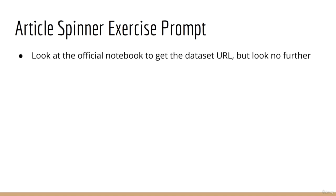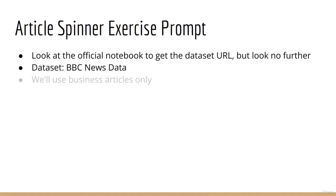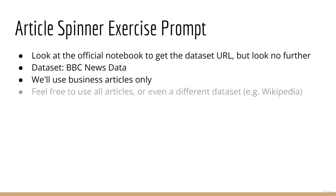In this lecture, I will be giving you an official exercise prompt to complete the article spinner. The dataset we'll be using is the BBC News data. Our model will be trained on the business articles only, so you'll need to filter out these articles. You may find that you prefer to train on all the articles, or perhaps on a different dataset entirely, such as Wikipedia. Personally, I think it would be more interesting if you used Wikipedia, since the dataset is much larger and contains much more text per article.